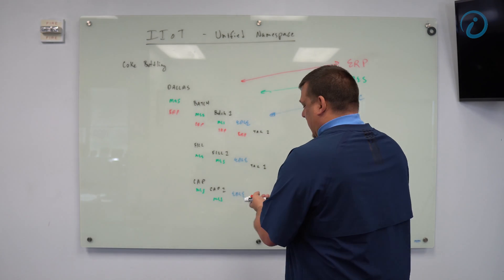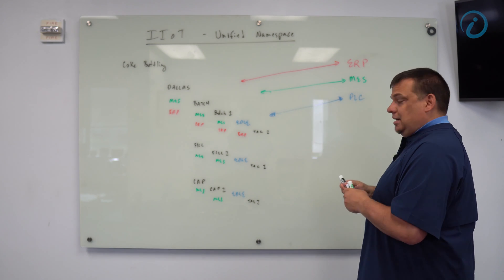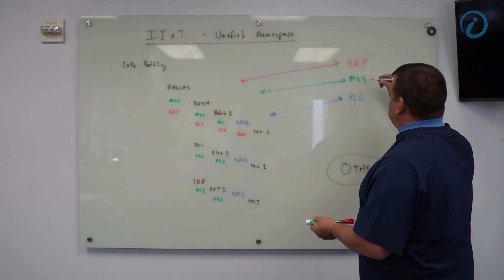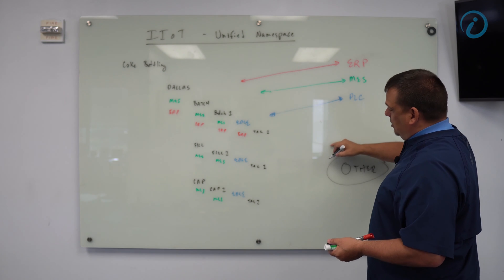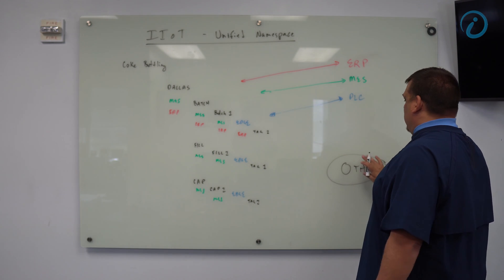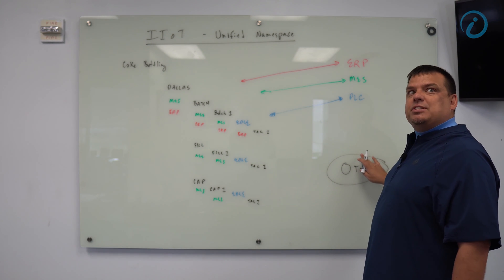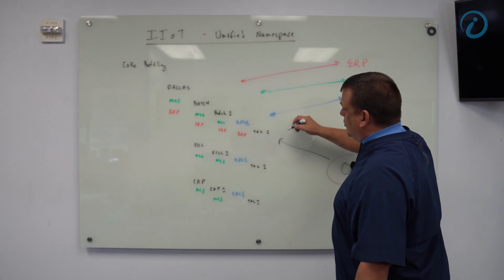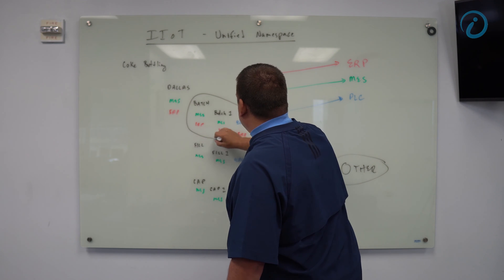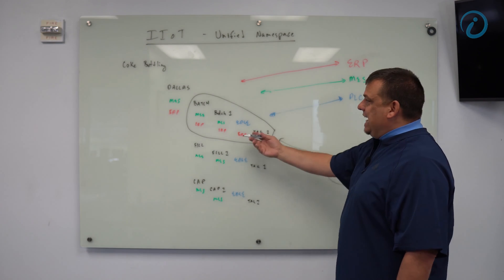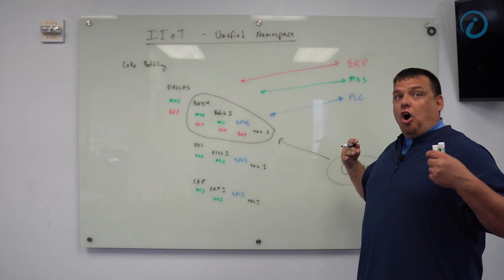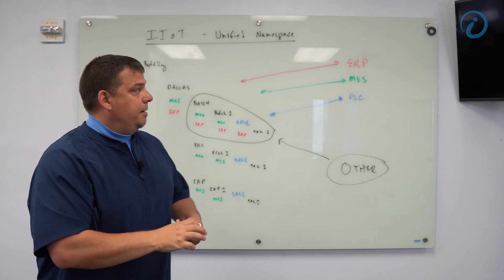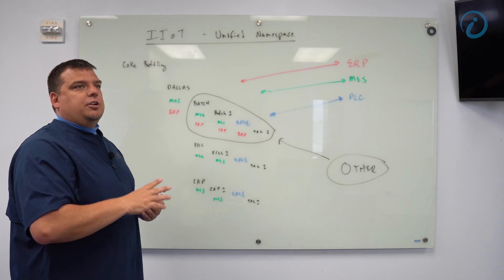So now what can happen is I can bring in another application, other application that needs information from all of these layers. And what we can do is we can say, let's say I'm running batch optimization for just batch line one. Well, I can write that program and get all of its information from here. And it contains all the MES, the ERP, it contains all of the information we care about. The fundamental difference between the unified namespace and the way that we do things today is, I'll draw an illustration.